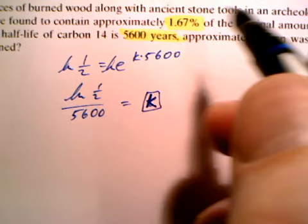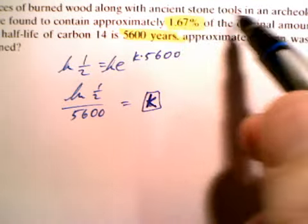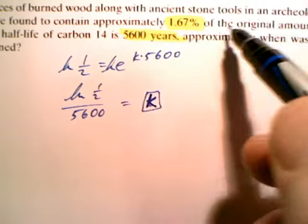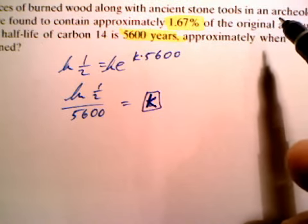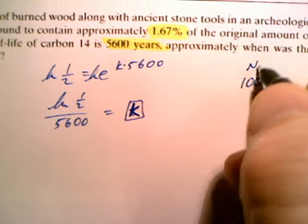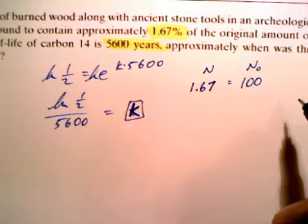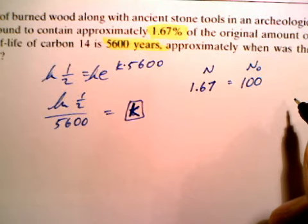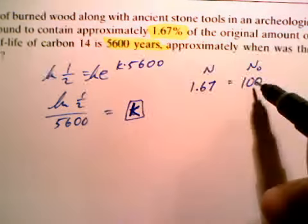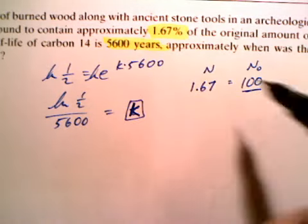The traces of burned wood, these relics that were dug up, contain 1.67% of the original amount. What does that mean? That means if you started with 100, so if N sub zero is 100, then that means N would equal 1.67. That makes sense, because 1.67 is 1.67% of the original amount. If the original amount is 100, 1.67 would be the new amount.